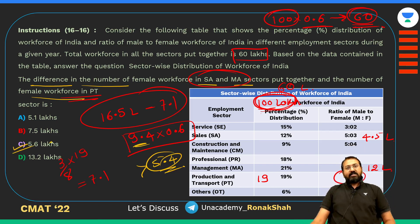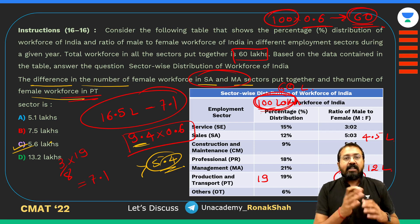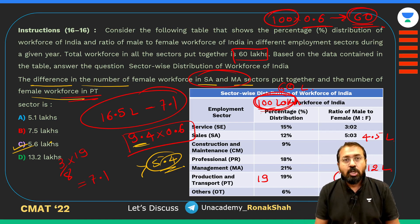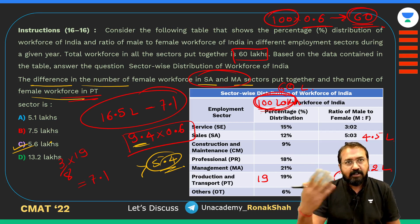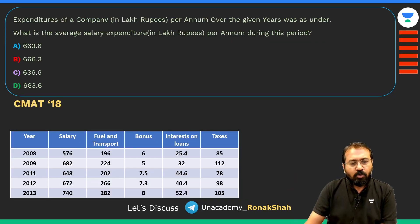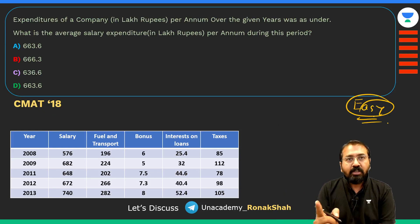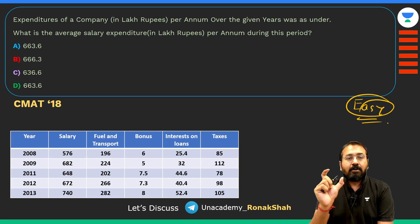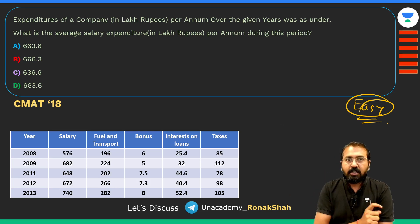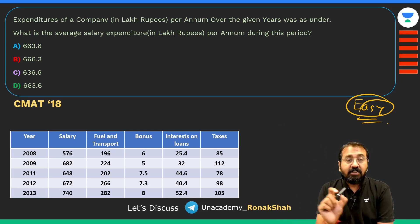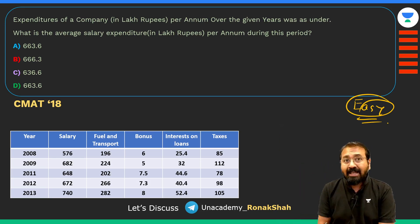I had released a detailed video on percentage, profit-loss, SI/CI which also covered this question and the same technique. Please check the description and watch those detailed quantitative aptitude videos. I'll also release one more DI video — Part 3 — covering erroneous DI questions, for example, pie chart questions where values in degrees don't add up to 360 degrees, and how to tackle those.